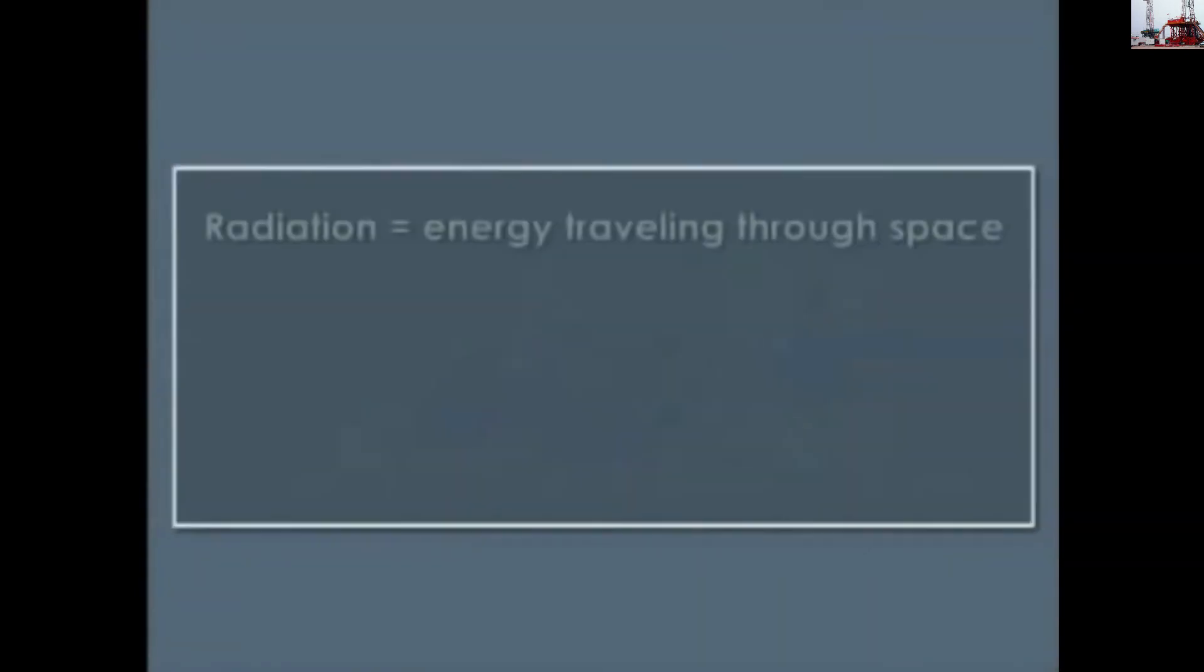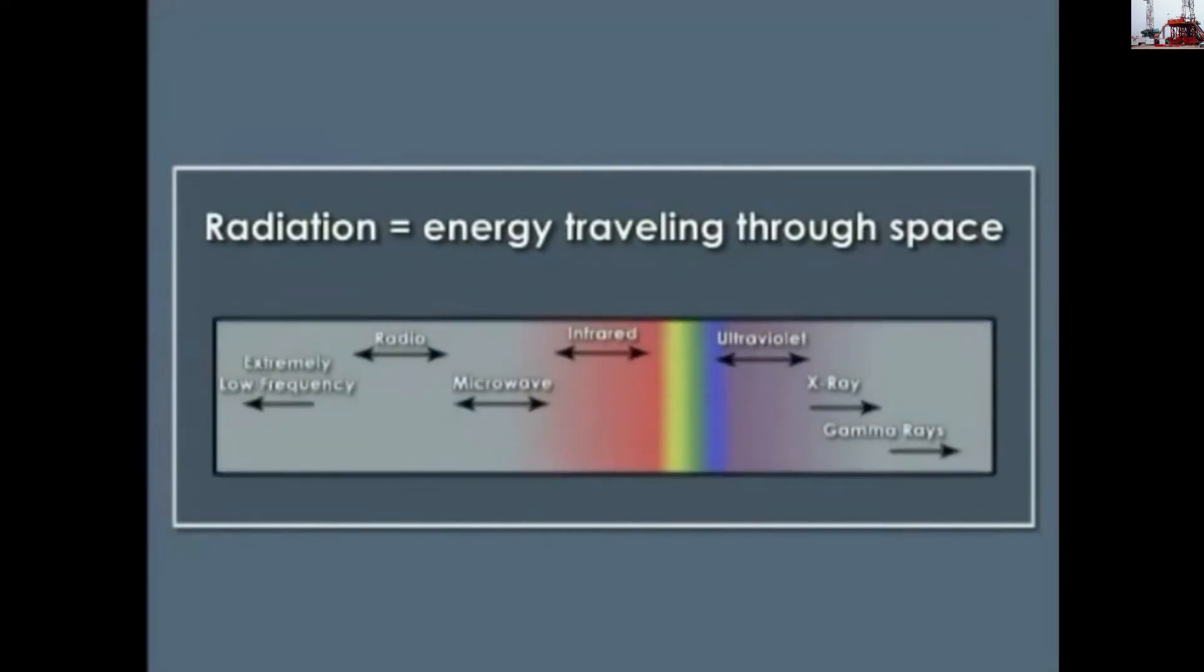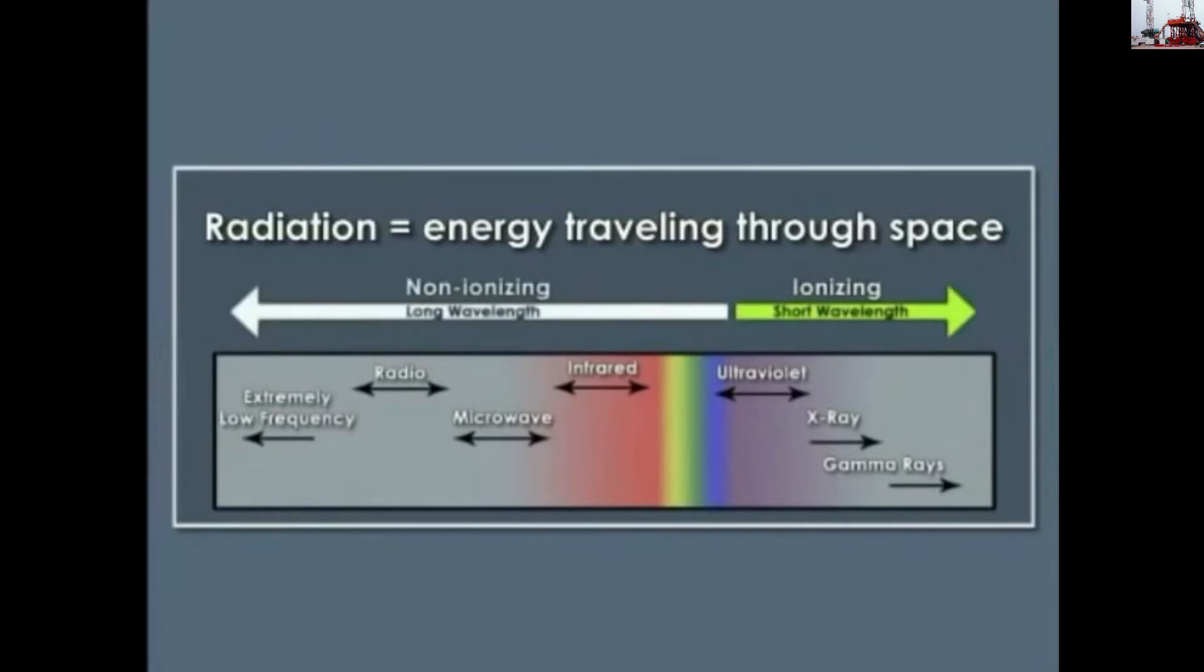Radiation may be defined as energy traveling through space and can be classified into two broad categories: ionizing and non-ionizing.